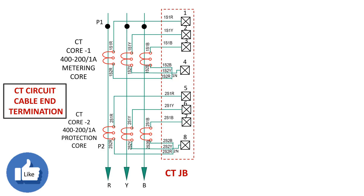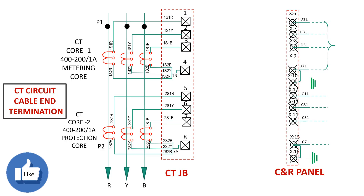We see the drawing of 33kV CT connections having one metering core and one protection core. At the CT end, all current transformers are wired according to the marking of secondary terminals, and wires are brought to a junction box and terminated at terminal block numbers 1 through 8. On the other side, at the control and relay panel, metering as well as protection wires — such as D11, D31, D51, D71, C11, C31, C51, and C71 — are brought to terminal blocks X6, X7, X8, etc.